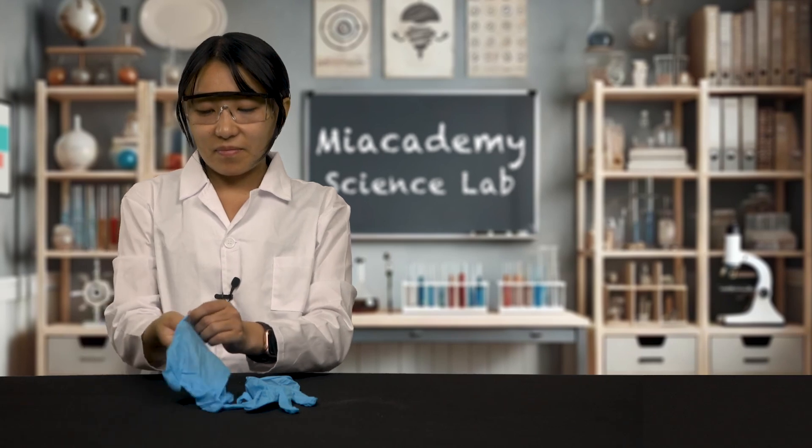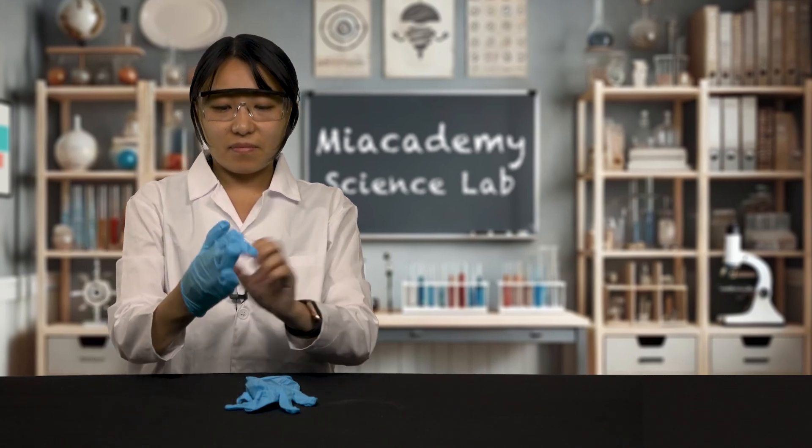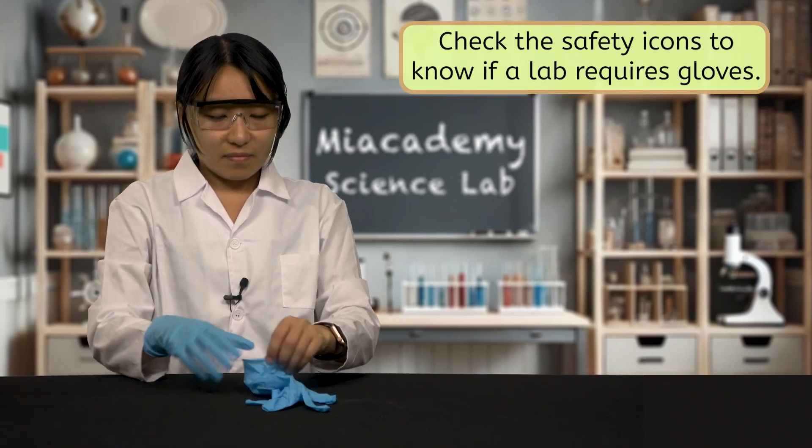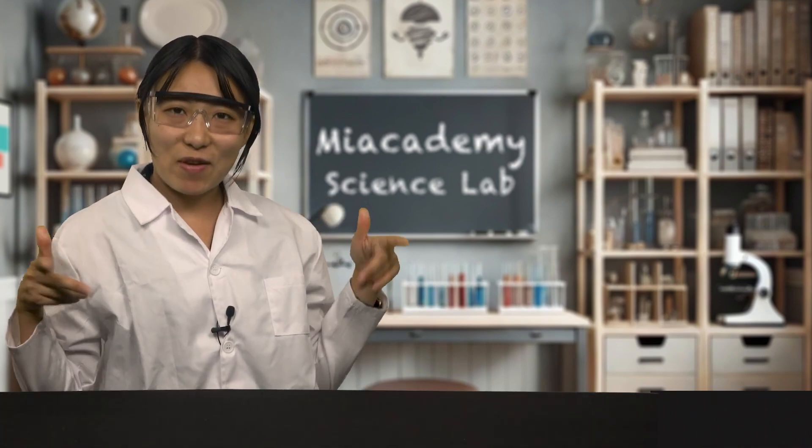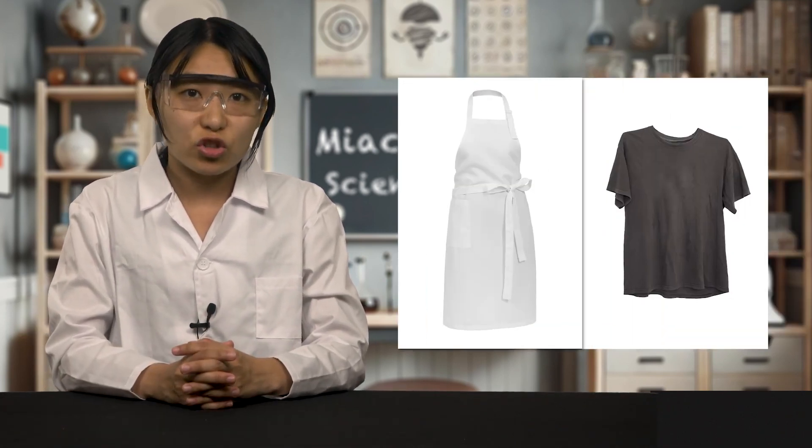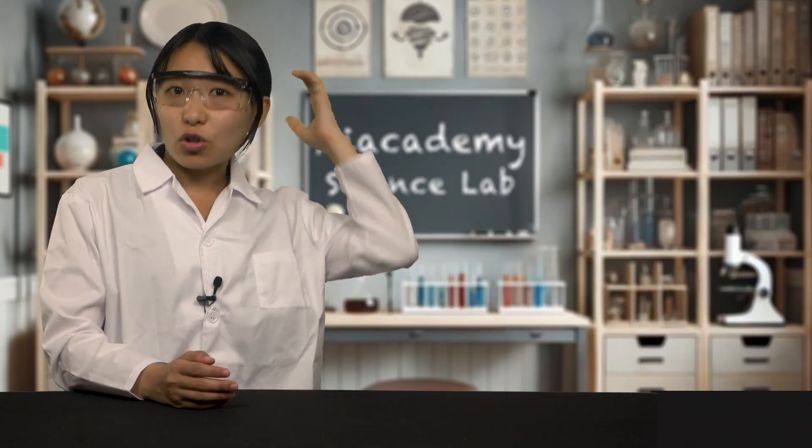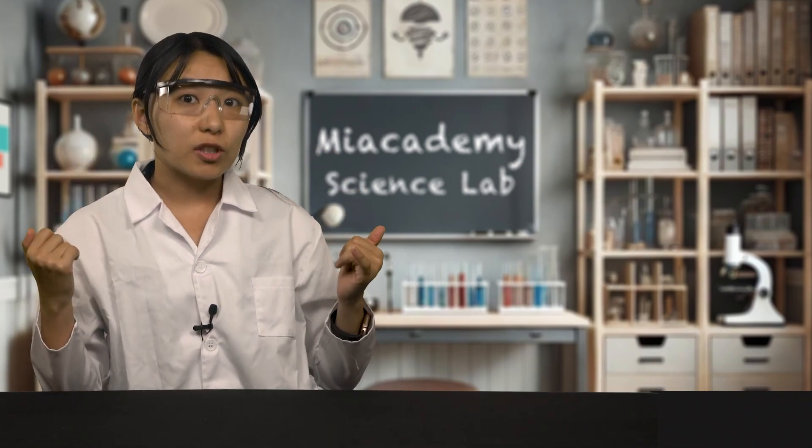Closed-toed shoes protect your feet from any broken glass or spills, and gloves help shield your hands from irritating chemical substances. You won't need gloves for every lab, but always check the safety icons to know for sure. And don't forget your clothes! Trust me, a lab coat isn't just for looking spiffy. It can save your favorite shirt from messy spills. If you don't have a lab coat, an apron or an old t-shirt should do the trick. Finally, make sure to tie back long hair, roll up loose sleeves, and remove any dangly jewelry. You don't want anything getting caught in your lab setup.